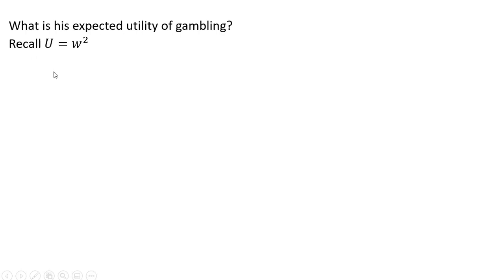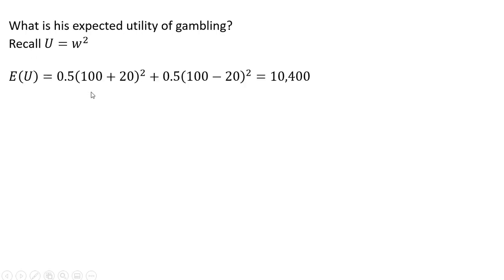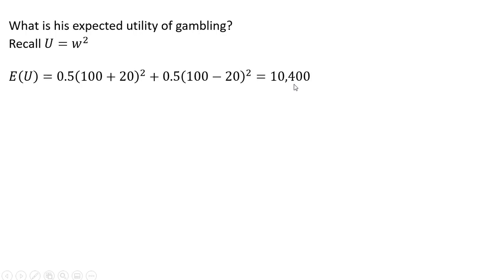What is his expected utility of gambling? The expected utility of gambling is given by the following: there is a 50% chance that this person's wealth will be $120 by winning the gamble — $120 because this person has wealth of $100 plus the $20 won — and that is squared per our utility function w squared. On the other hand, there's a 50% chance that this person will lose $20, so their wealth will be $80, and that $80 is squared. Doing the math, we get an expected utility of $10,400.